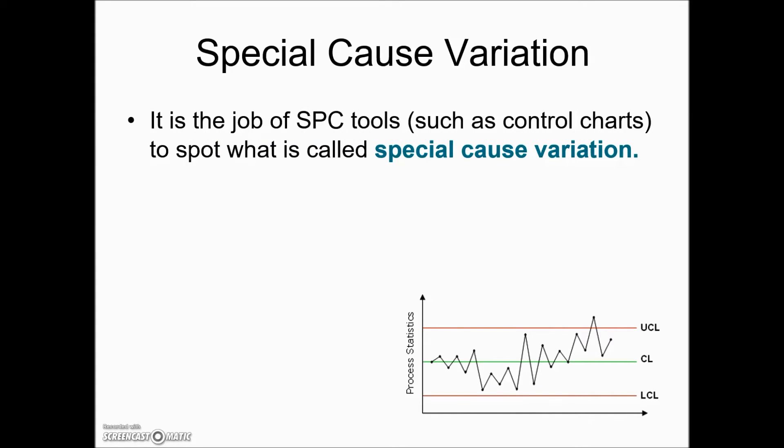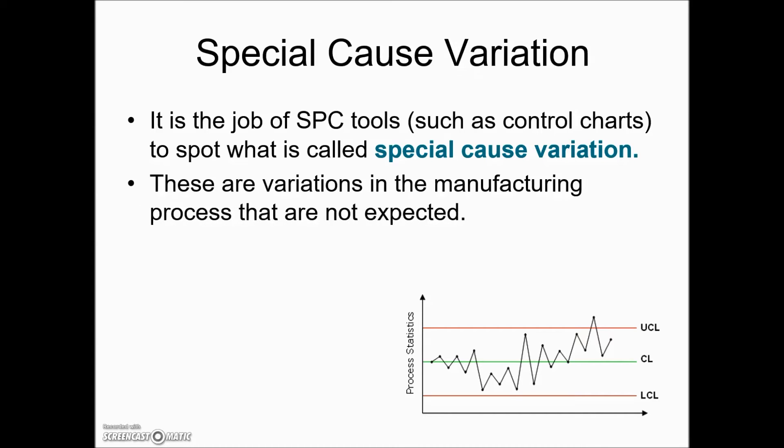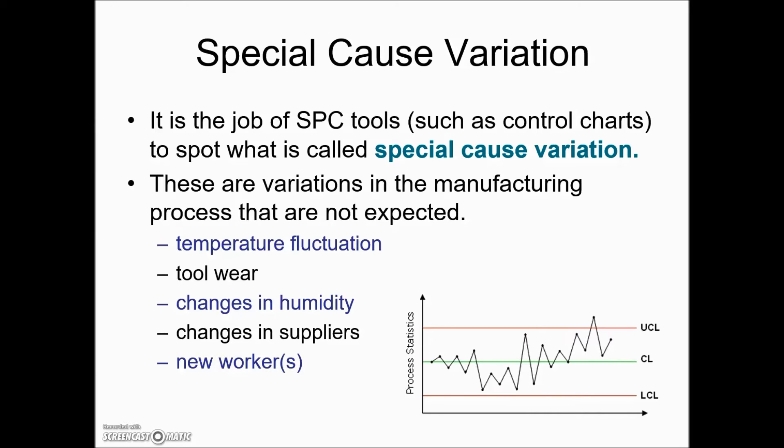Any manufacturing has a certain amount of variability and when we have a process that's giving us a value that is perhaps beyond the upper control limit or below the lower control limit, we need to stop the process because of the fact that these control charts are made while the process is occurring. This allows further errors to be avoided and fixing them now rather than later. Values that or variations that might not be expected would be a temperature fluctuation, tool wear, changes in humidity, changes in suppliers where quality might be affected, new workers and worker error, countless other possibilities where the problem would need to be identified quickly so that further losses aren't incurred.